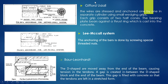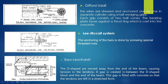In the Gifford-Udall system — this was the first system used — the wires are stressed and anchored one by one. Each grip consists of two half-cone wedges. The bearing plate bears against the strand.